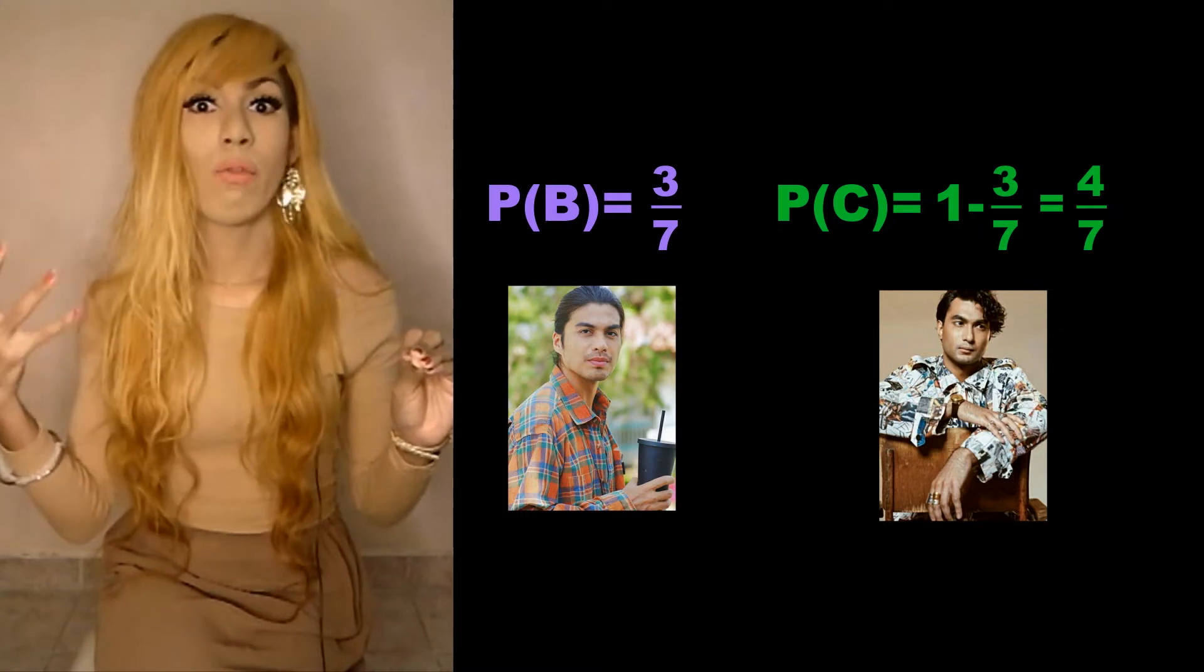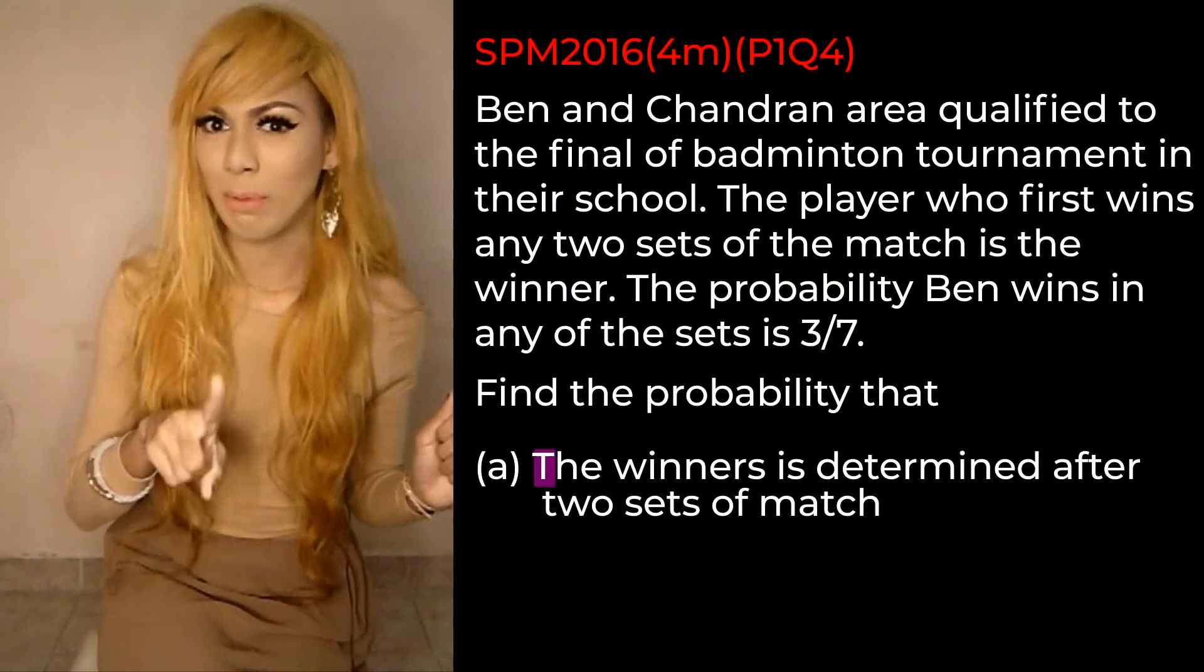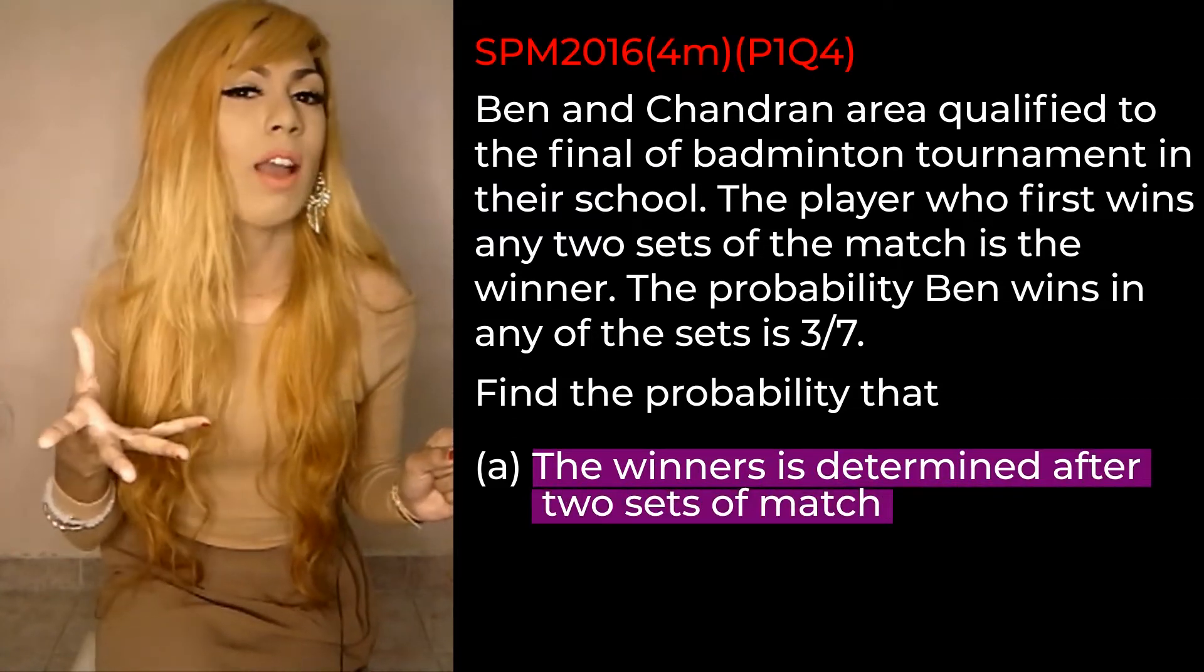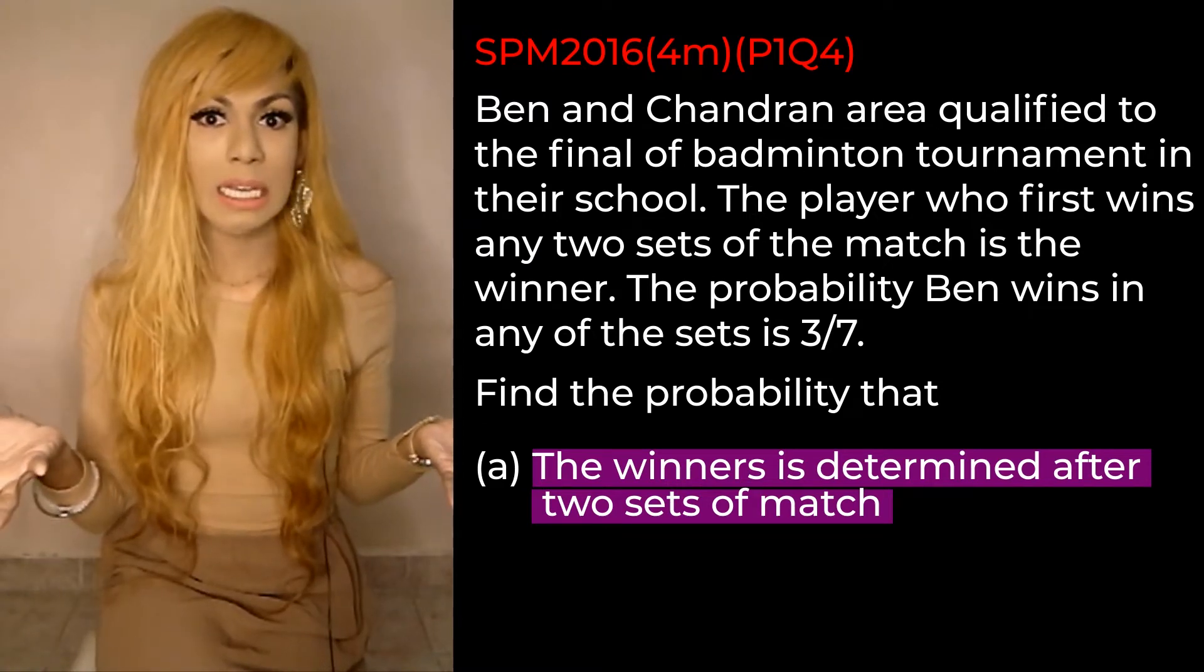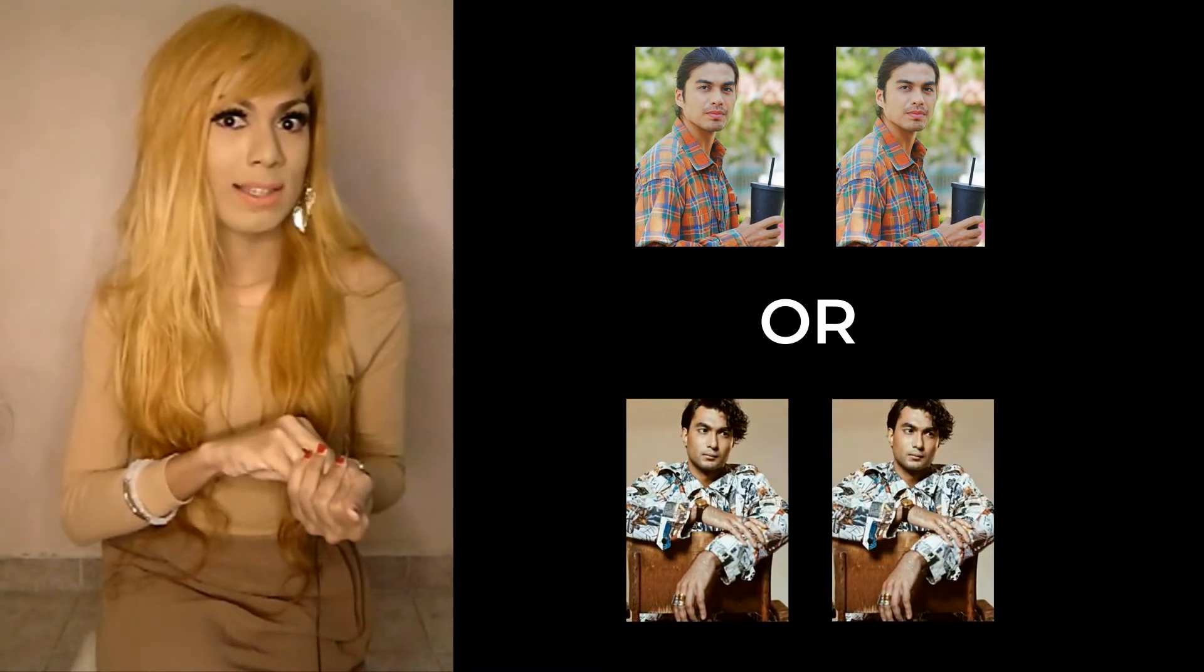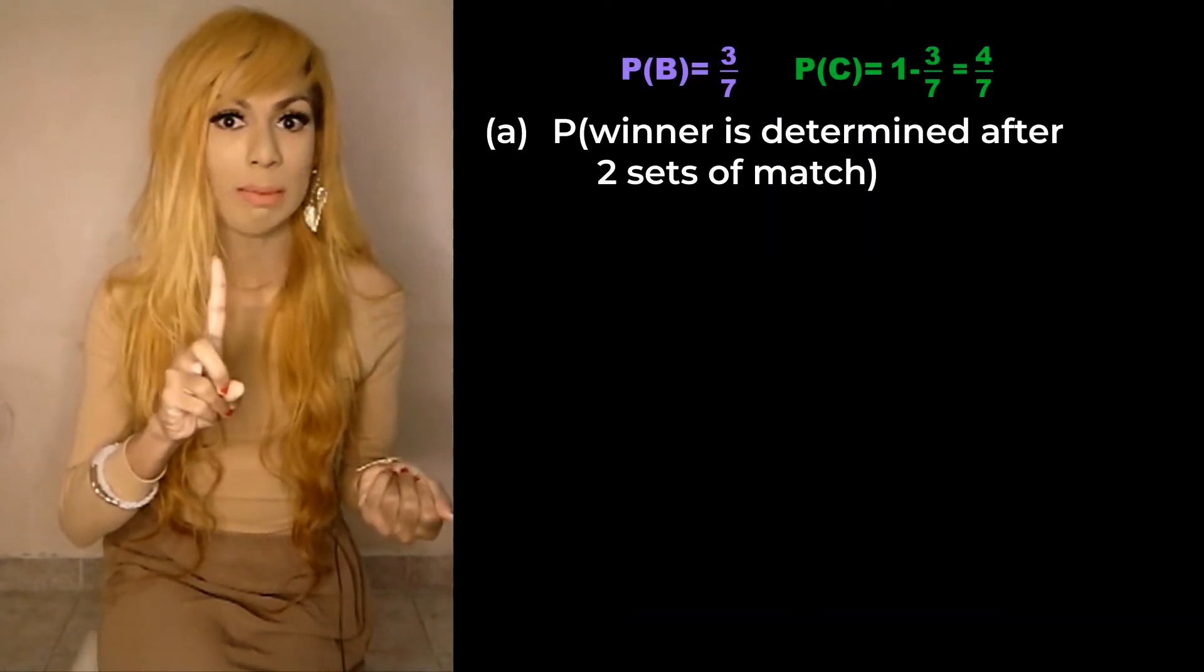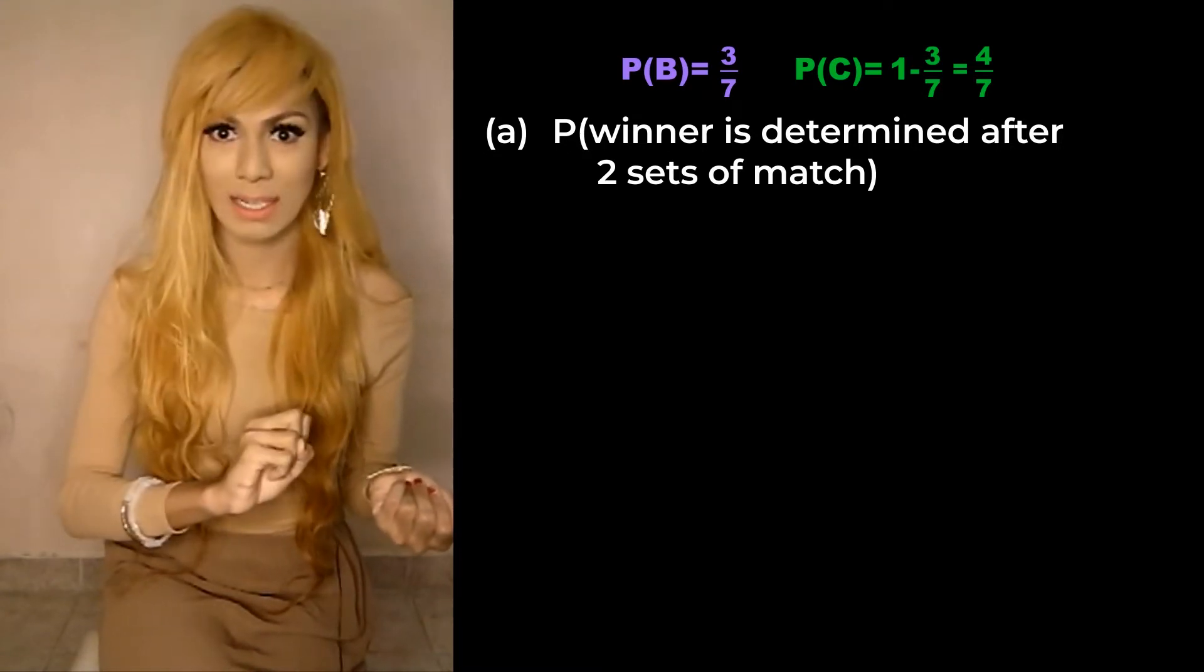So the first part of the question is: find the probability that a winner is determined after two sets of game, which means Ben have to win consecutively twice or Chandran have to win consecutively twice. So we would write P, probability a winner is determined after two sets of match.